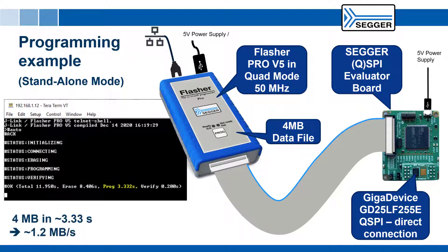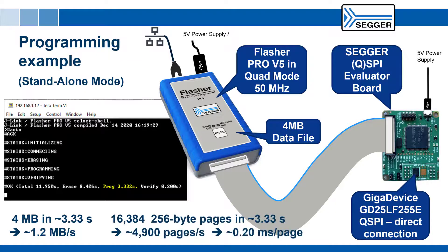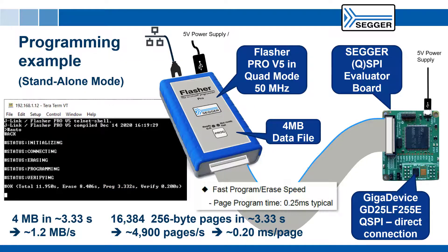4 MB of data programmed in about 3.33 seconds, at a speed of about 1.2 MB per second. We are programming 16,384 256-byte pages in 3.33 seconds, which means an average of about 4,900 pages per second, or an average programming time of about 0.20 milliseconds. The QSPI datasheet lists the page programming time as 0.25 milliseconds typical, so we are essentially programming the QSPI Flash at maximum speed.